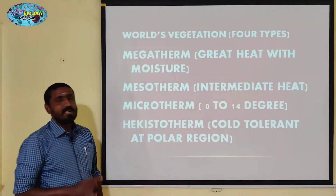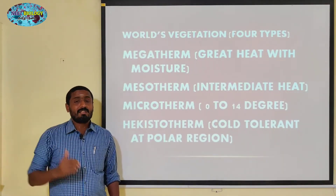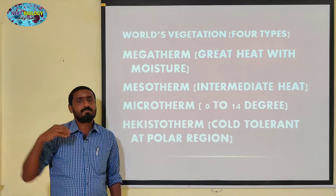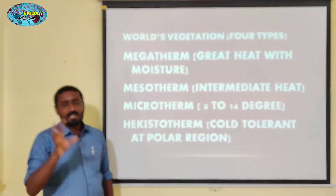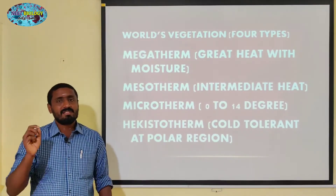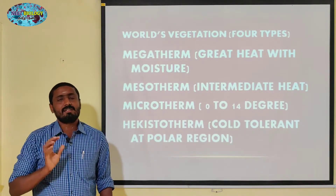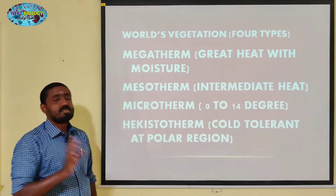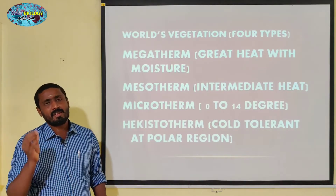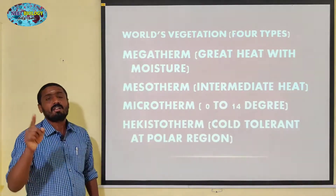Next, hecistothermic — it is cold tolerant. Polar regions and the heavy hill regions like the Himalayas are extremely cold. The polar region is the best example for hecistotherms. Hecistothermic plants and animals live in hecistothermic areas. The world's vegetation is classified into four types by Rankier.